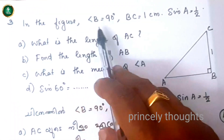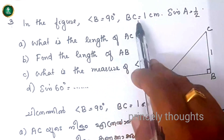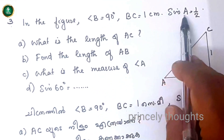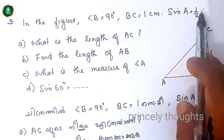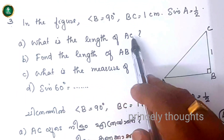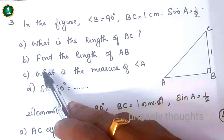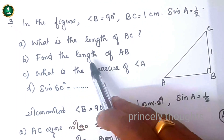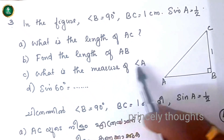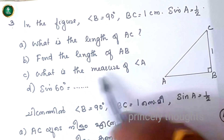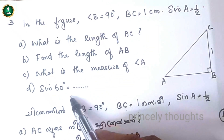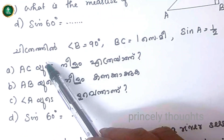Next question: in the figure, angle B is equal to 90 degrees. BC is equal to 1 cm. Sin A is equal to 1 by 2. Part a: what is the length of AC? Part b: find the length of AB. Part c: what is the measure of angle A? Part d: sin 60 degrees equals what?